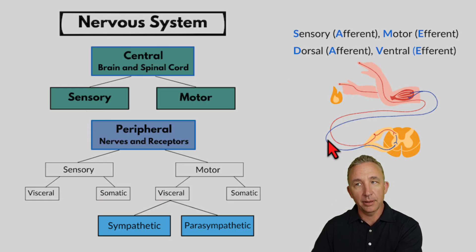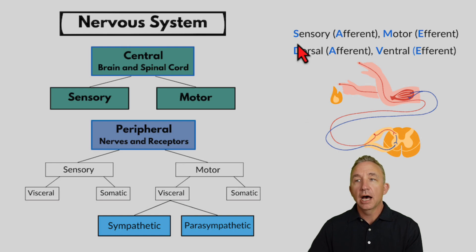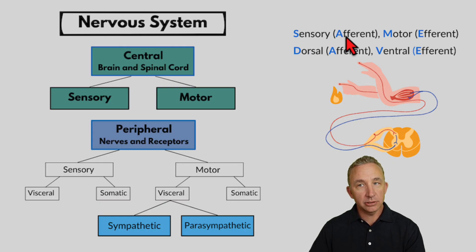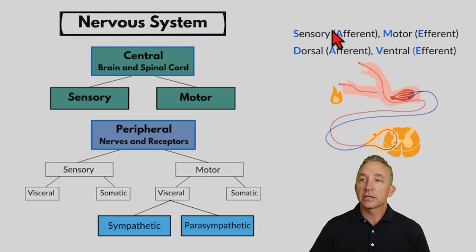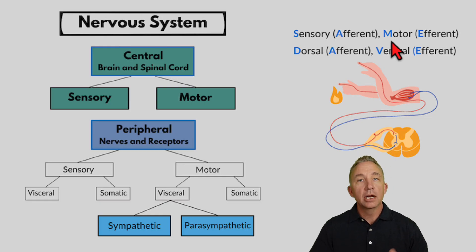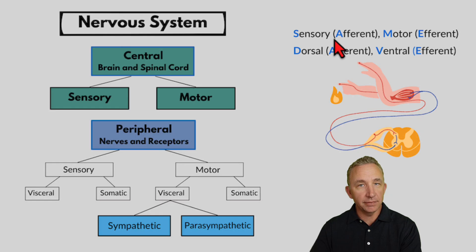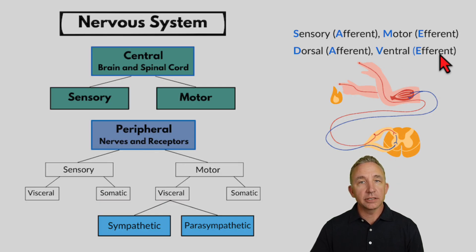I use the mnemonic SAME and DAVE. There are two divisions: I sense things and I react with the motor. In between I have my integrative or association neurons — that interpretation. Sensory information goes to the brain and spinal cord, meaning it's afferent — going toward the CNS. Motor goes away from the brain and spinal cord — E for away — out to the periphery. So sensory is also called the afferent division, and motor is also called the efferent division.